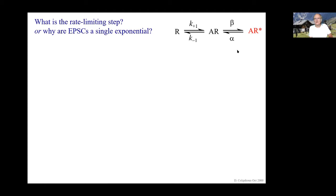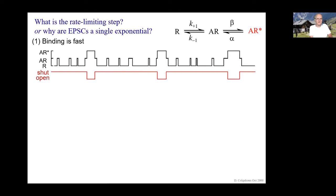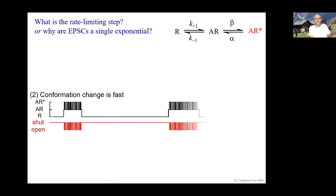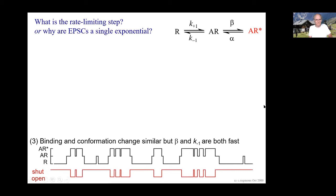To recapitulate, we can use the simple Del Castillo-Katz mechanism once again: a simple binding of an agonist A to a receptor R followed by isomerisation of the occupied receptor to the open state. We ruled out simple mechanisms as explanations for relaxations being more or less a single exponential. We concluded that probably what was going on was that both the opening rate and dissociation rate are fast, so the concentration of the intermediate is small, and this predicts that openings will occur in short bursts, each burst containing a few openings.